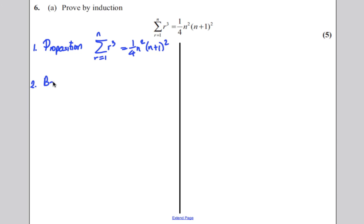Step 2: you check the basis case. The basis case is when N equals 1. So you let N be 1. The left-hand side, the sum from R equals 1 to 1 of R cubed, would simply be 1 cubed, which is 1. The right-hand side would be a quarter times 1 squared times 1 plus 1 all squared, which would end up being a quarter times 1 times 4, which would again be 1. Therefore, the proposition is true for N equals 1.